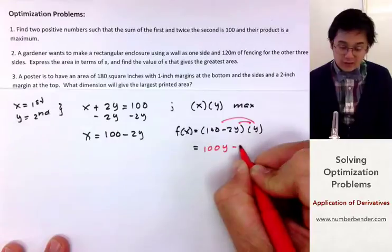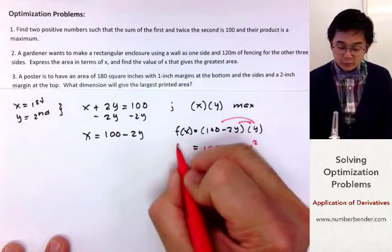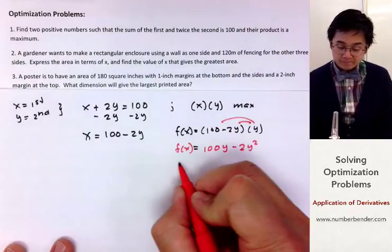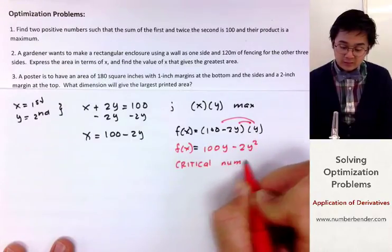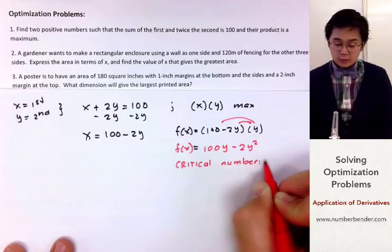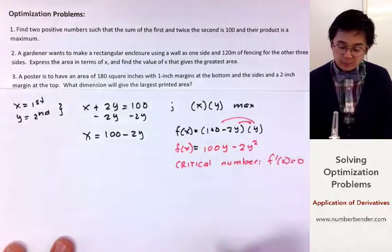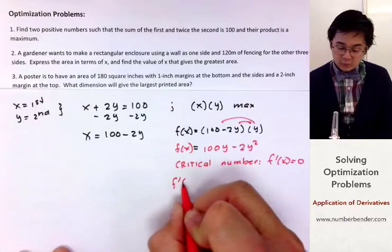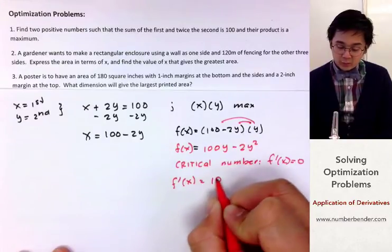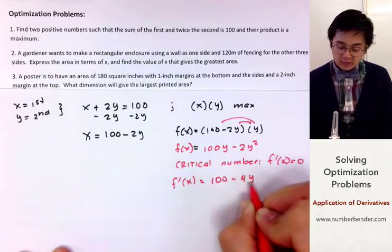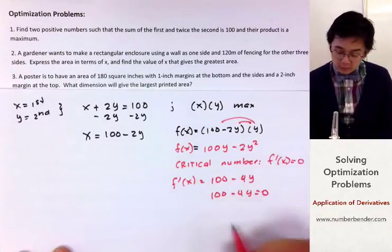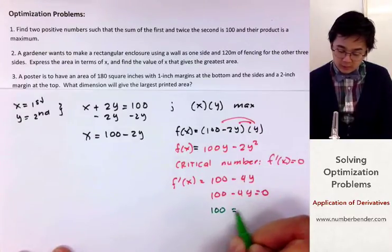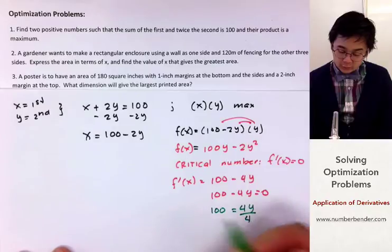This is our new f(y), and we use it to find the critical number by setting the derivative equal to zero. The derivative is 100 minus 4y. Setting it to zero gives 100 equals 4y. Dividing by 4, y equals 25.